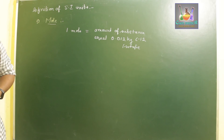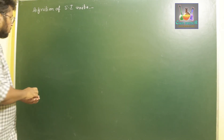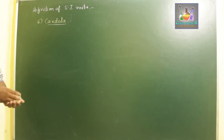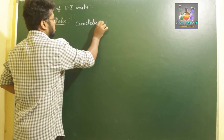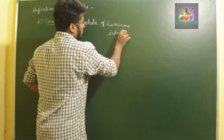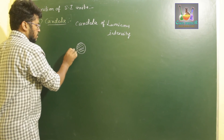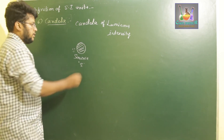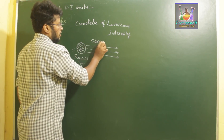Next is the definition of luminous intensity — the SI unit candela. Candela is the SI unit for luminous intensity. To define candela, consider a source S that emits radiation. If this source emits radiation at a frequency of 540 × 10¹² hertz, this is used to establish the definition of one candela.